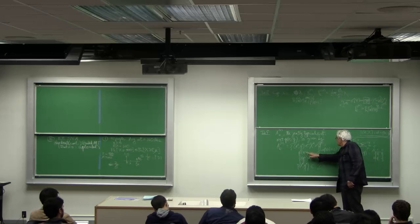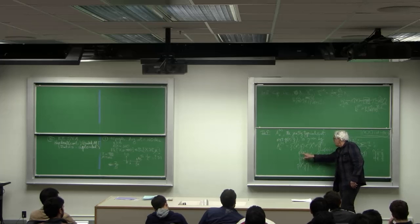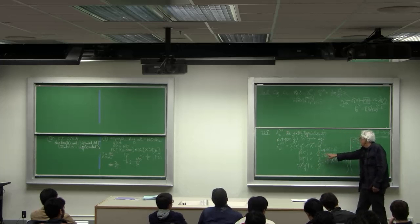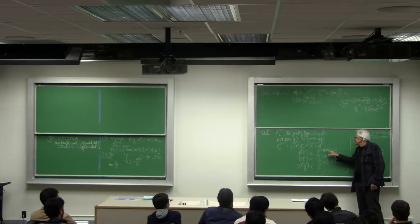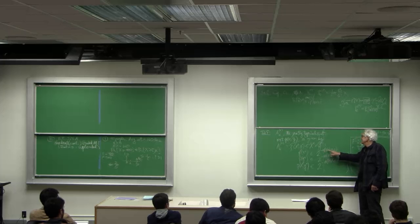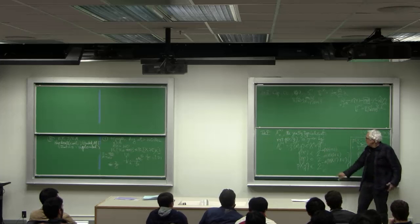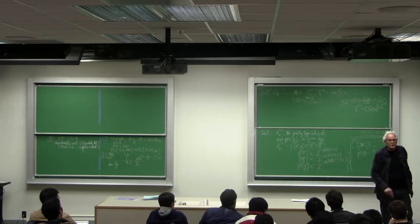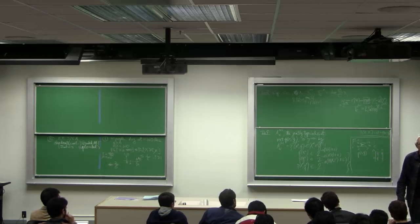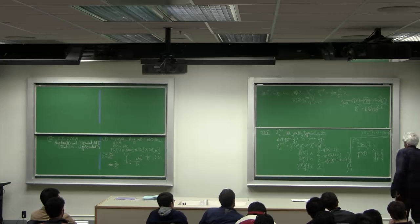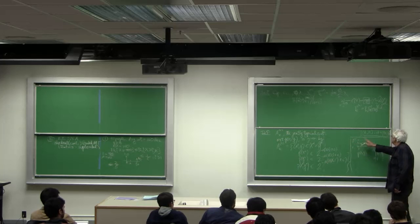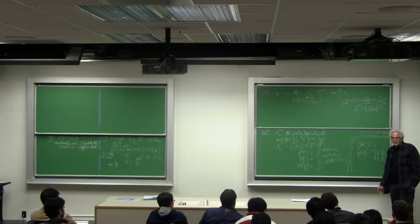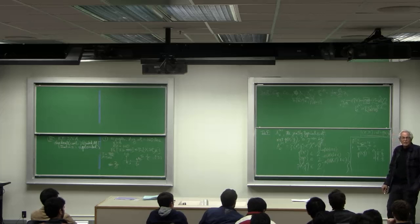So we just demand that the probability mass on x is close to 2 to the minus n times 1, 2 to the minus n, but all the probability masses are 2 to the minus n so all of the sequences x are individually typical. So the x's are typical, all the y's are typical, but not all the x y pairs are typical. What do you think?